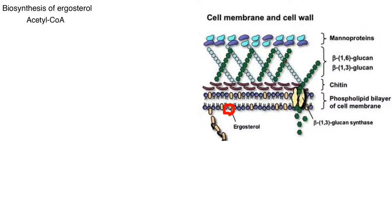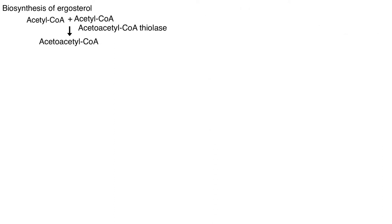Acetyl-CoA is the metabolic intermediate present in the fungal cell. Two acetyl-CoA molecules combine together to form acetoacetyl-CoA with the help of enzyme acetyl-CoA thiolase. This acetoacetyl-CoA then forms HMG-CoA with the help of enzyme HMG-CoA synthase.